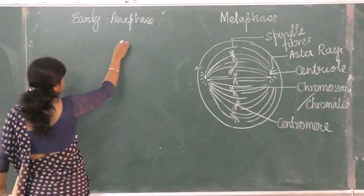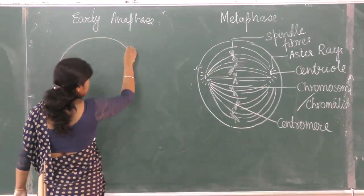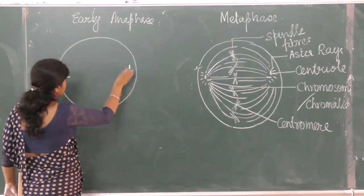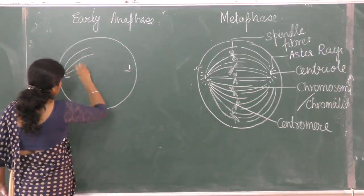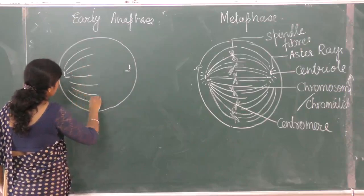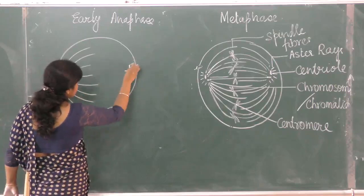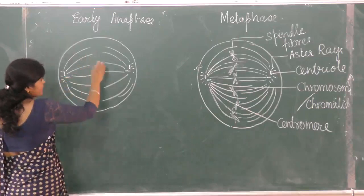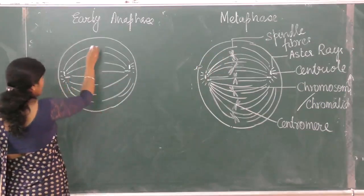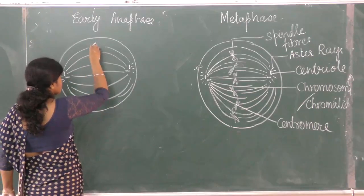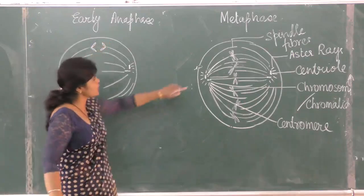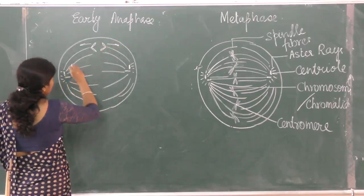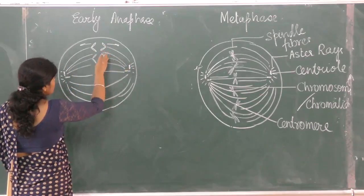In early anaphase, this is the cell: these are the two centrioles, these are the spindles with the asters. The spindles have started to contract, and chromosomes are breaking apart. One part of each sister chromatid is pulled to one side, and the other part is pulled to the opposite side — this happens with all chromosomes.